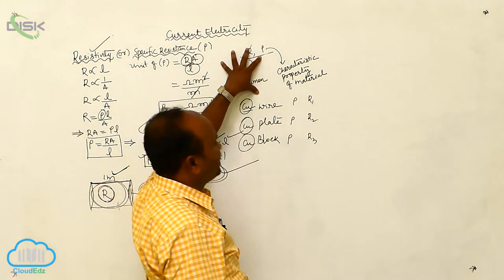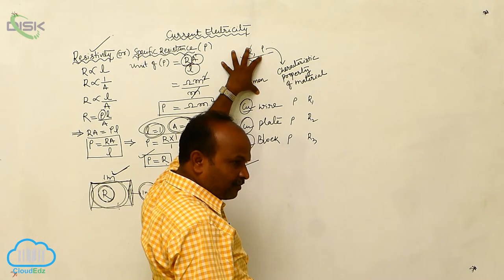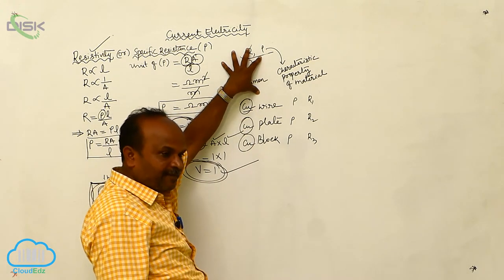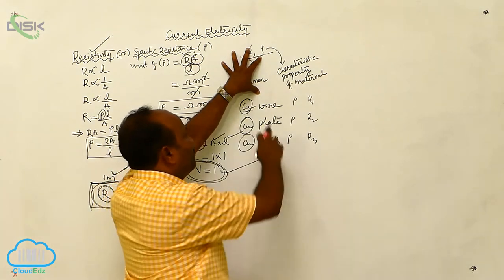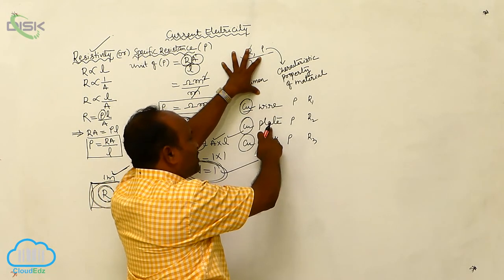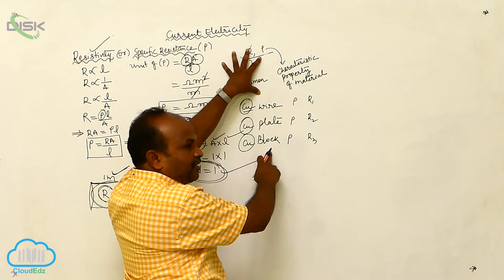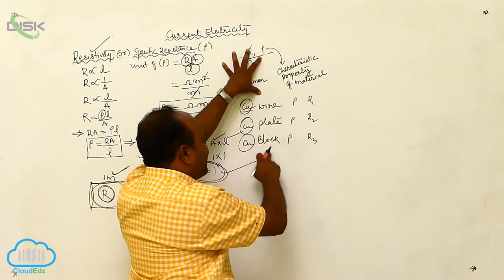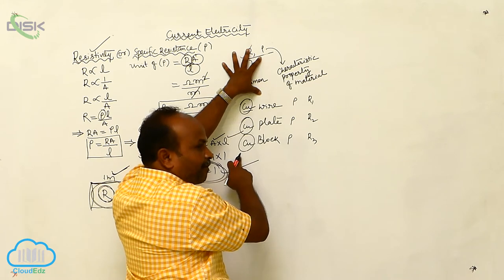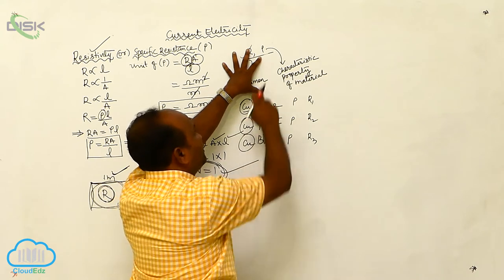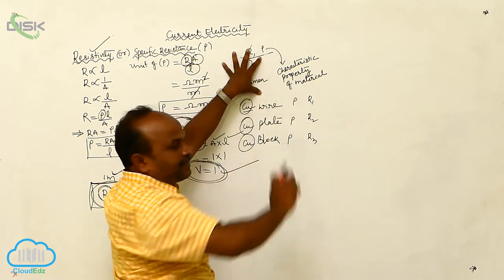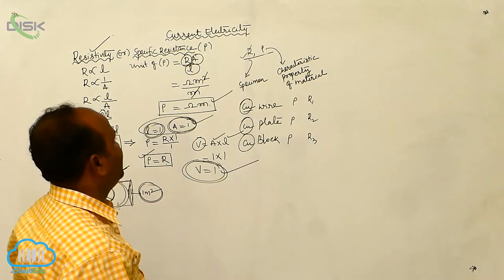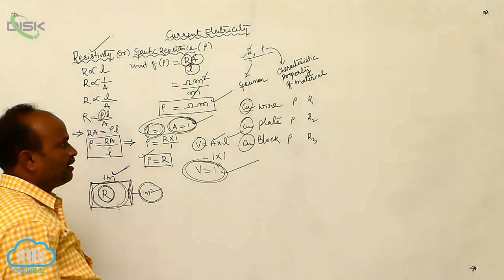Therefore, resistance is the characteristic property of the specimen. This resistance depends upon the dimensions of the object — one-dimensional, two-dimensional, or three-dimensional. Therefore, resistances are different. But these three are made of the same material, copper, so for copper the resistivity is the same, because resistivity is the characteristic property of the material.